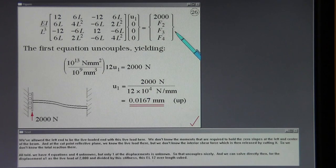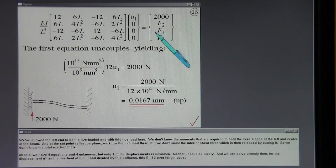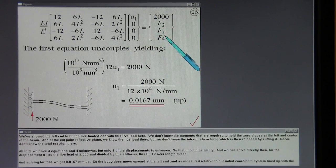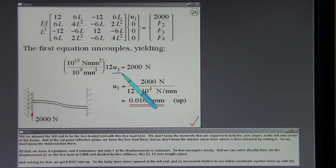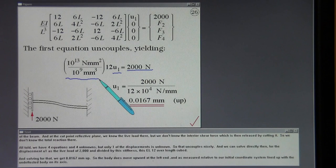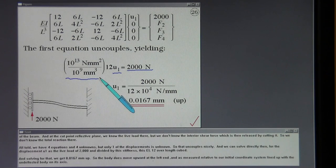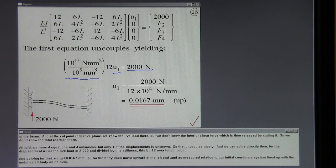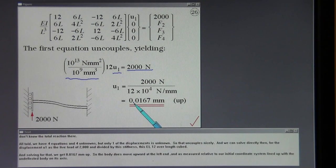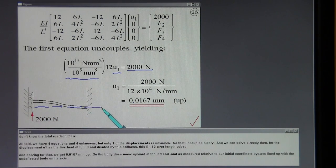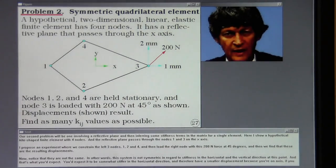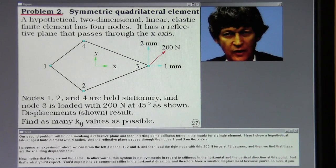And at the cut reflective plane we know the live load there but we don't know the interior shear force which is then released by cutting it. So we don't know the total reaction there. All told we have four equations and four unknowns but only one of the displacements is unknown. So that uncouples nicely. And we can solve directly then for the displacement U1 as the live load of 2000 N divided by this stiffness, this EI 12 over length cubed. And solving for that we get 0.0167 millimeters up. So the body does move upward at the left end and as measured relative to our initial coordinate system lined up with the undeflected body on its axis.